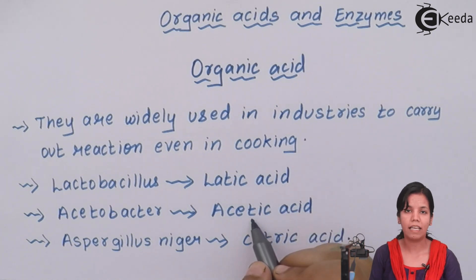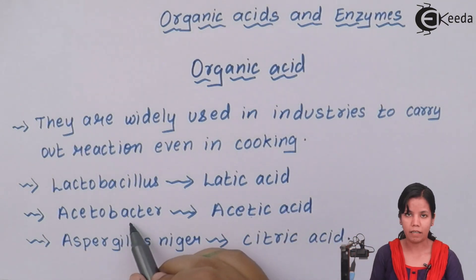Second one, acetic acid. Yes, acetic acid or commonly known as vinegar, widely used in production of or you can say for cooking Chinese food products. It's produced by an organism called acetobacter.